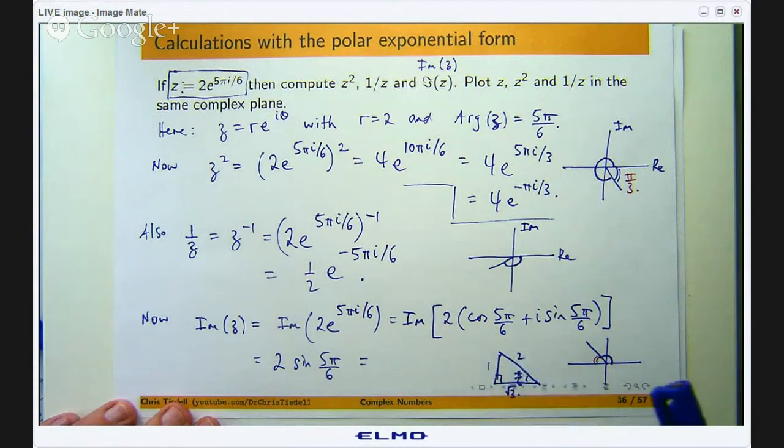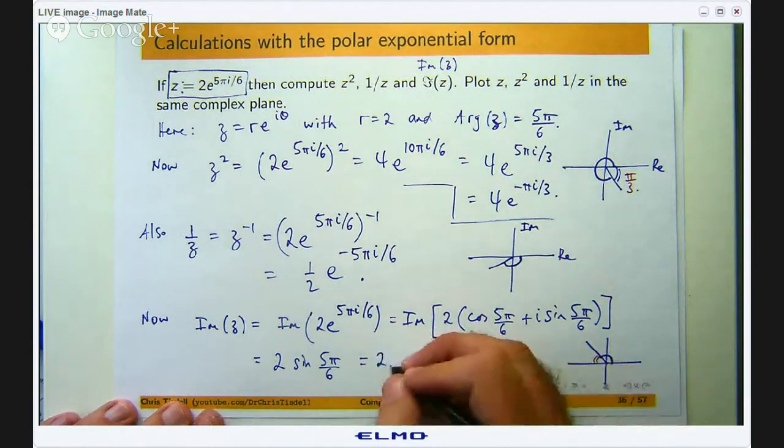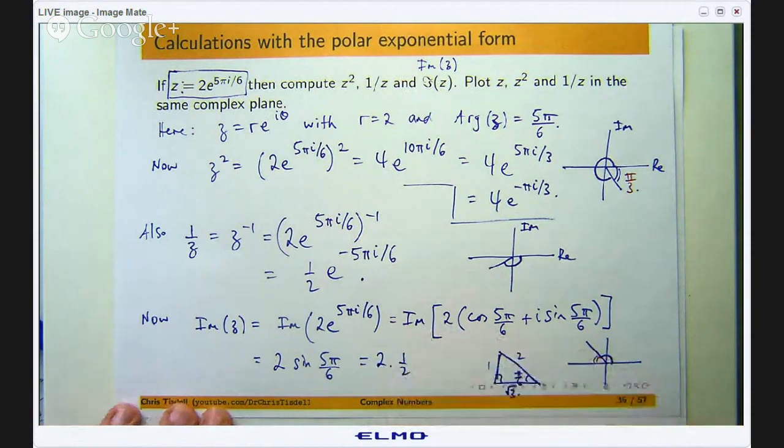Okay so because if you work out the sin of π/6 that's opposite over hypotenuse and you know that cos and sines are positive here. So CAST: cos, all, sine and tan. So this is just 2 times 1/2 which equals 1.